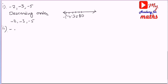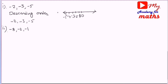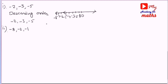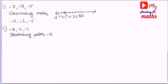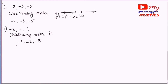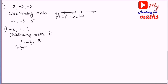Second bit: minus 8, minus 2, minus 1. On the number line: minus 5, minus 6, minus 7, minus 8. Minus 1 is the largest number. In descending order: minus 1, then minus 2, then minus 8.